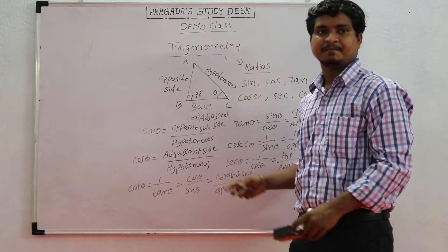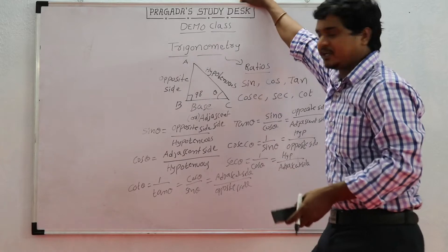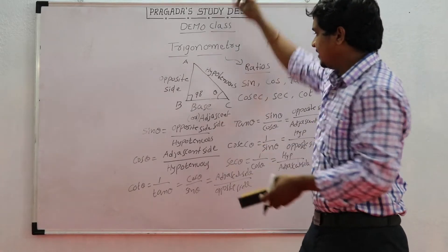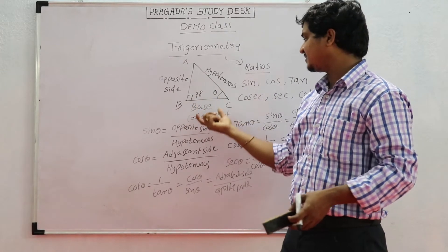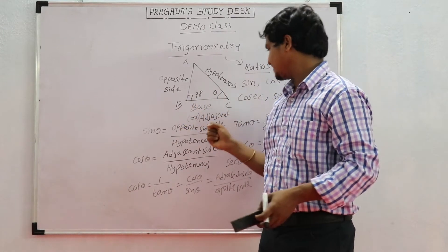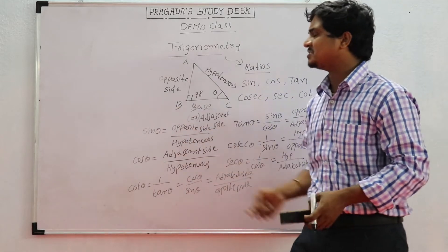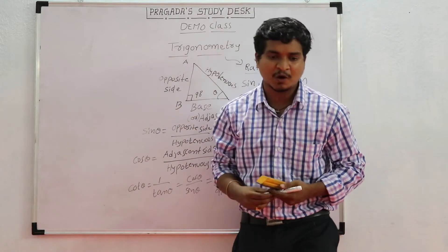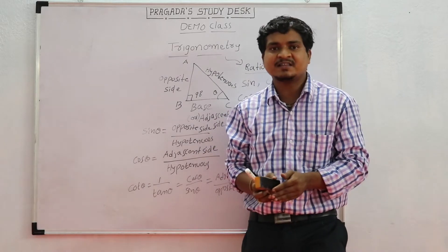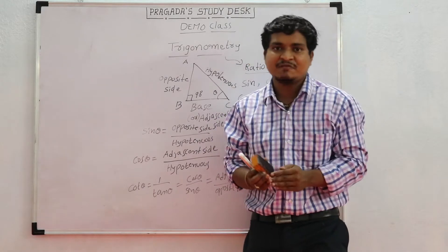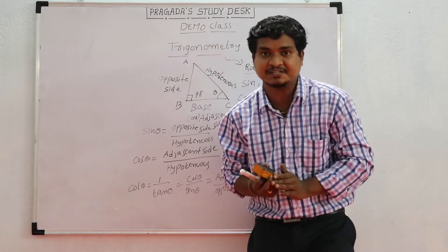These are the main basic formulas for trigonometry. Depending on the right triangle, we can measure the sides using trigonometry ratios. The main applications of trigonometry are measuring the heights of buildings, mountains, and the tides in the ocean.